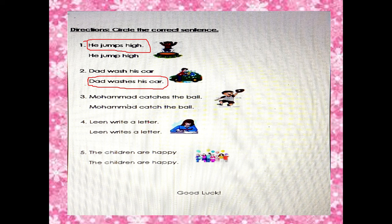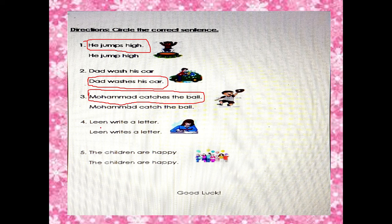How about question number three? Who can answer? Look — big letter and big letter, period with period — it's the same. So which one is the correct answer? The correct answer is the first sentence. Why? Because look at the verb — catch becomes catches. If the subject is one, we add es: catches. And question number four: Lean writes a letter. Lean is only one — big letter, period. The verb agrees with the subject, so the answer is the one with es. Because the subject of the sentence is only one, the verb agrees with it. Is it clear, KGs?